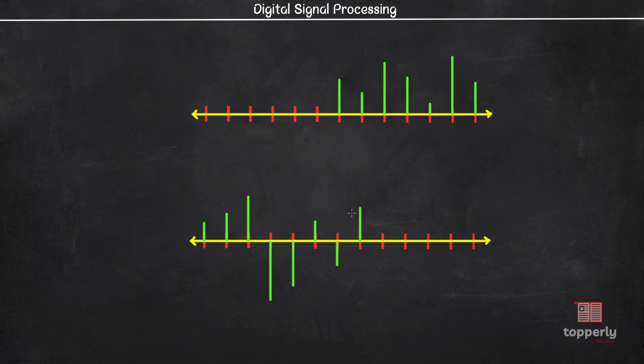Now, consider a sequence that exists from n equal to n1 and goes all the way to the right to any value. But on the left of n equal to n1, all the samples are 0. This n1 can be any finite integer. That is, n1 can be minus 5, 0, 10, 100 or any other finite integer. Then, this kind of sequence is called a right-sided sequence.